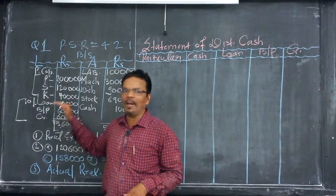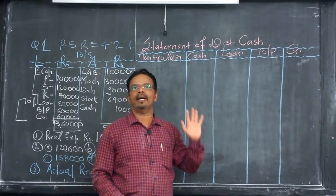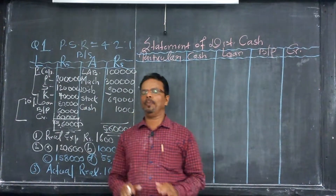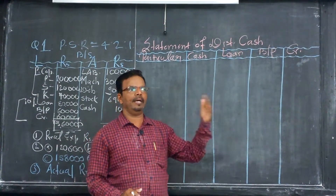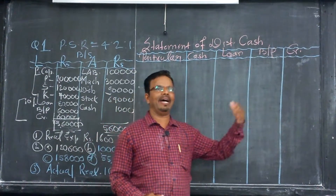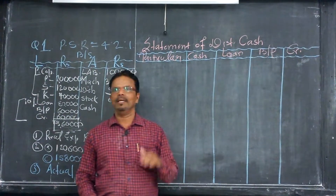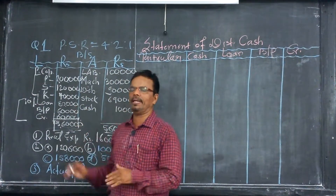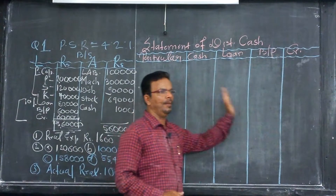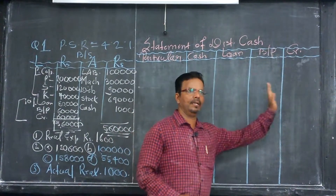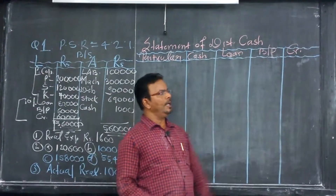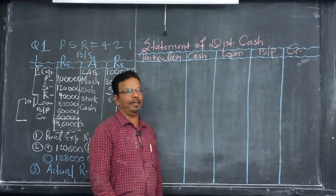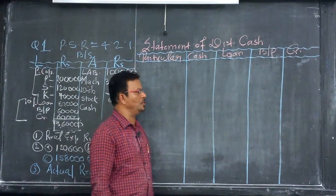Outsider liability is again divided into two parts: secured and unsecured. In this balance sheet, all liabilities are unsecured. So we have to pay all liabilities in their pro rata ratio — that means we have to pay the liabilities in their outstanding balancing ratio. Let's start how to prepare the statement of distribution of cash.